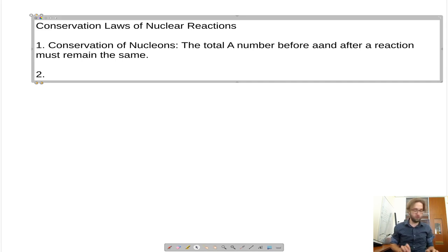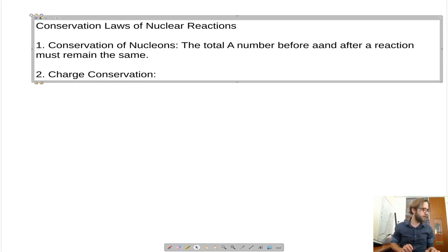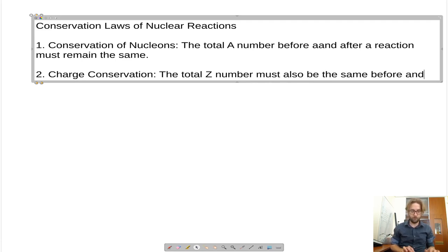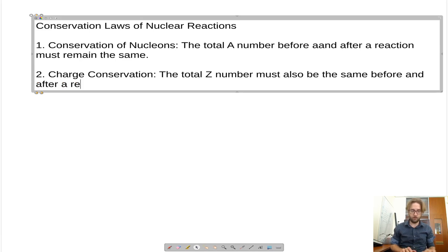Number two, we also have charge conservation. You might be familiar with this from other physics classes. This states that the total Z number — the total charge — must also be the same before and after a nuclear reaction.